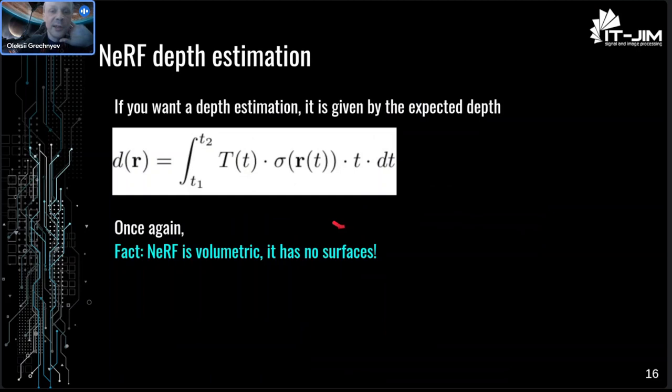In practice, integrals are replaced by sums of points, and points are sampled in a smart way — not a uniform grid, but some kind of adaptive sampling. You can also estimate the so-called expected depth, which is the estimate of depth. If you have a good surface, it will give you a good depth estimate. But once again, NOF is volumetric — it has no surfaces in the formalism.